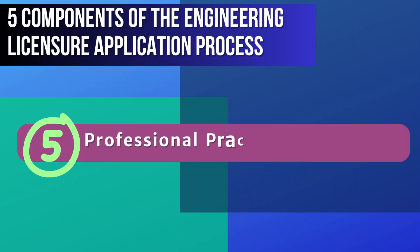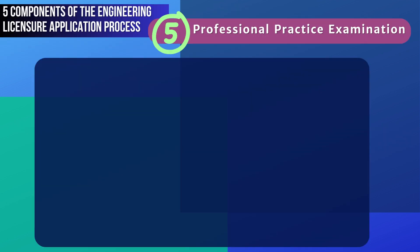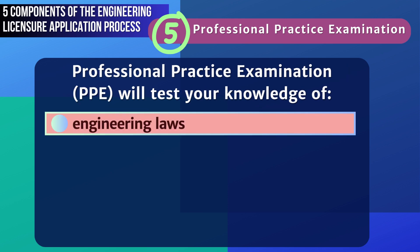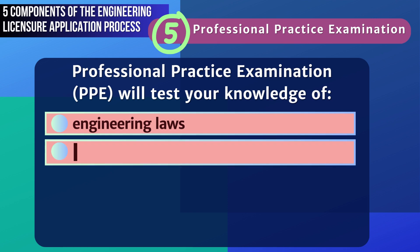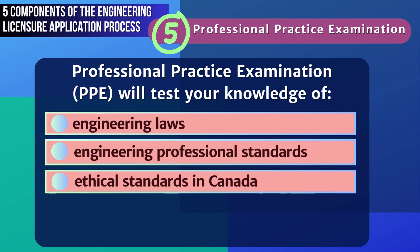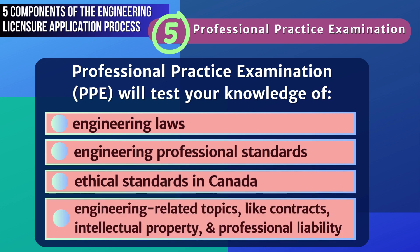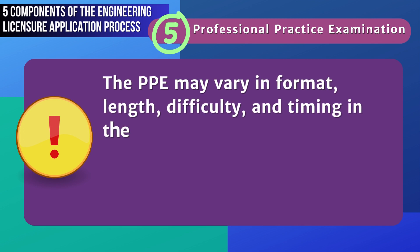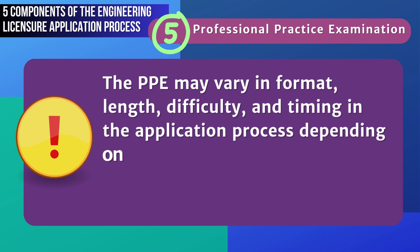Five, professional practice examination. To become an engineer in Canada, you must take and pass the professional practice examination. This exam will test your knowledge of the laws that directly or indirectly impact the engineering profession, the professional standards that engineers must uphold, the ethical standards in Canada, and other relevant topics such as contracts, intellectual property, and professional liability. The PPE may vary in format, length, difficulty, and timing in the application process, depending on the engineering regulator where you are applying for licensure.